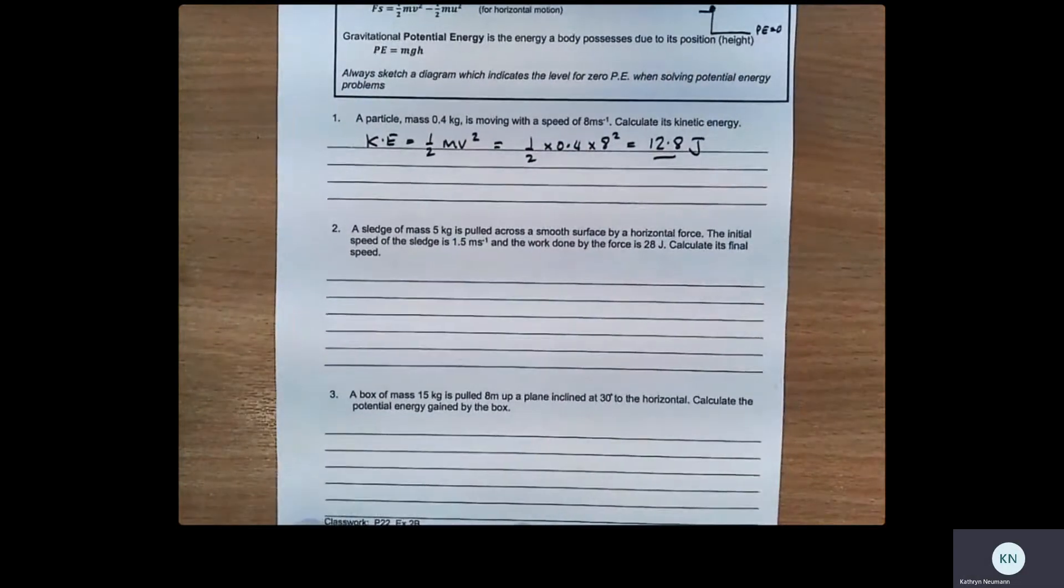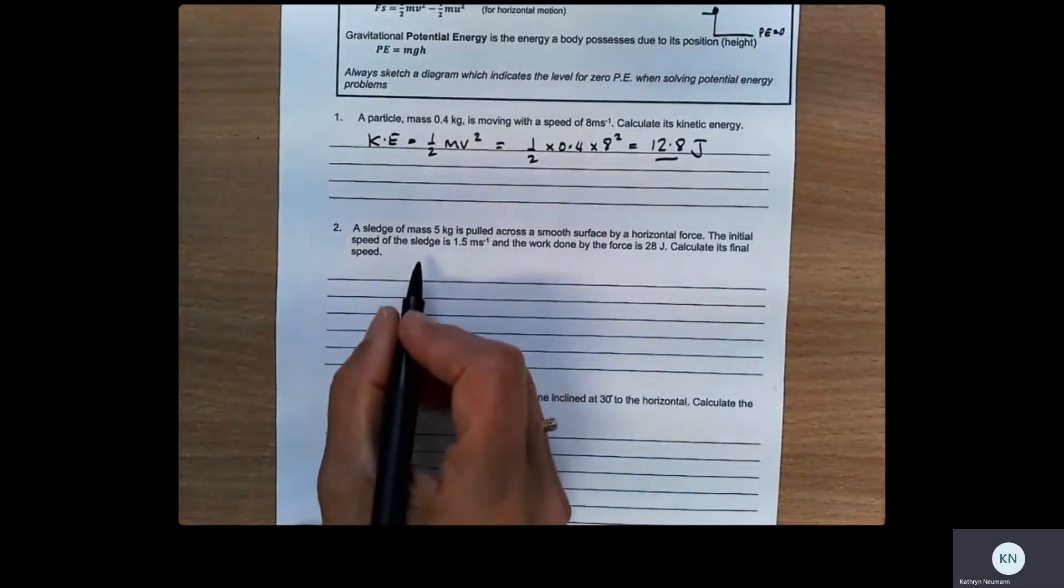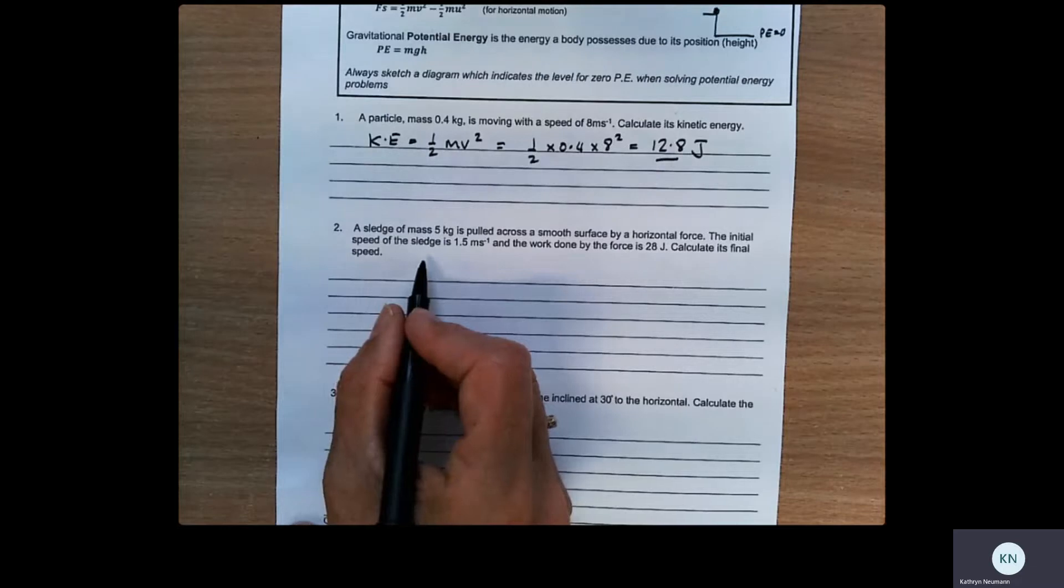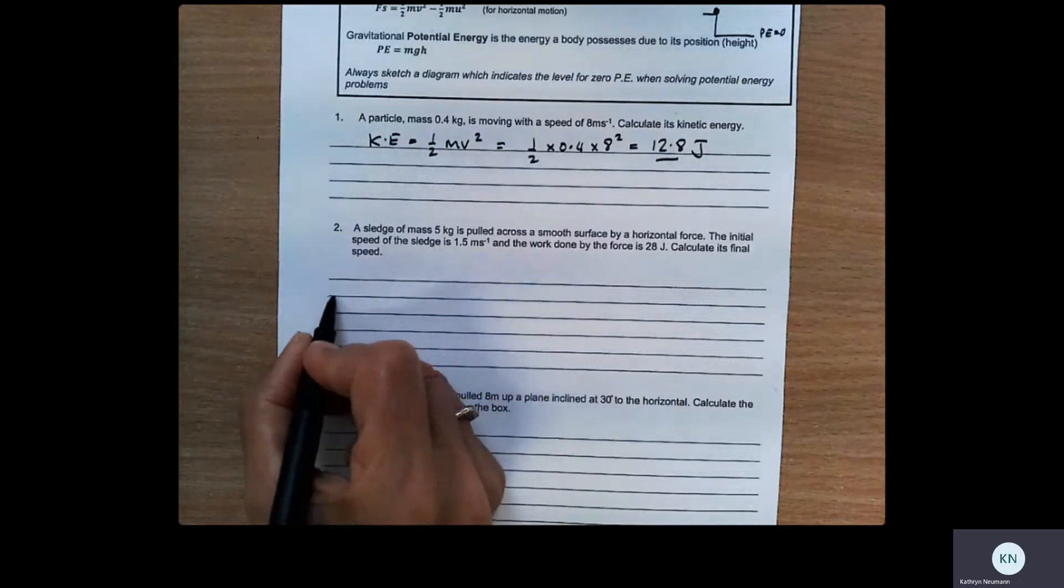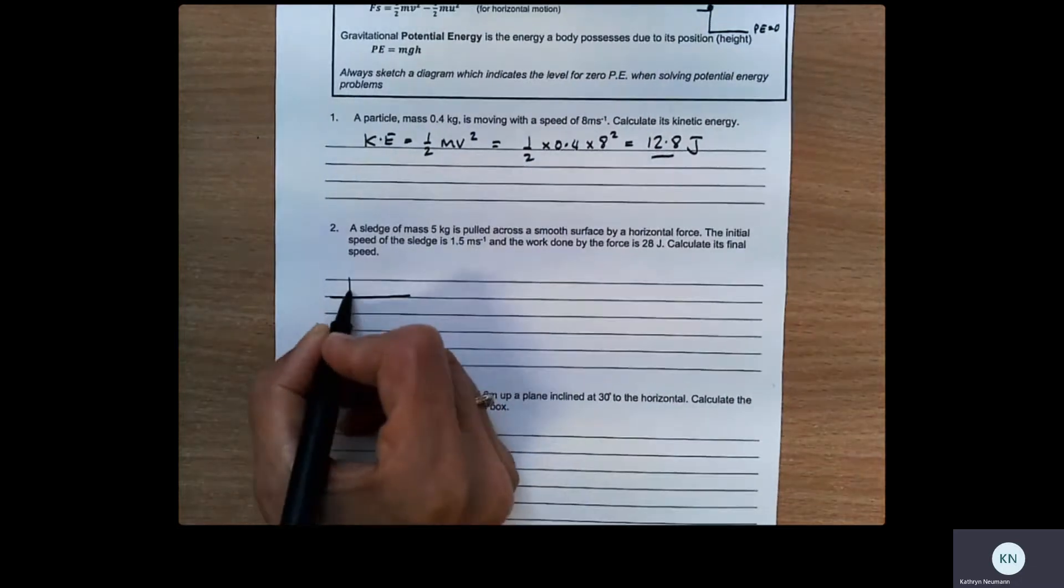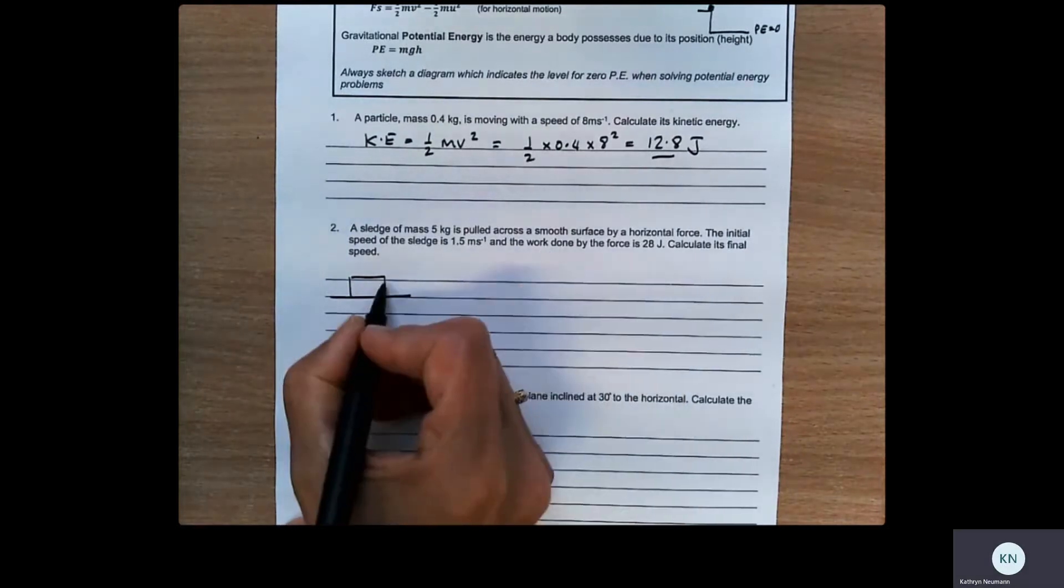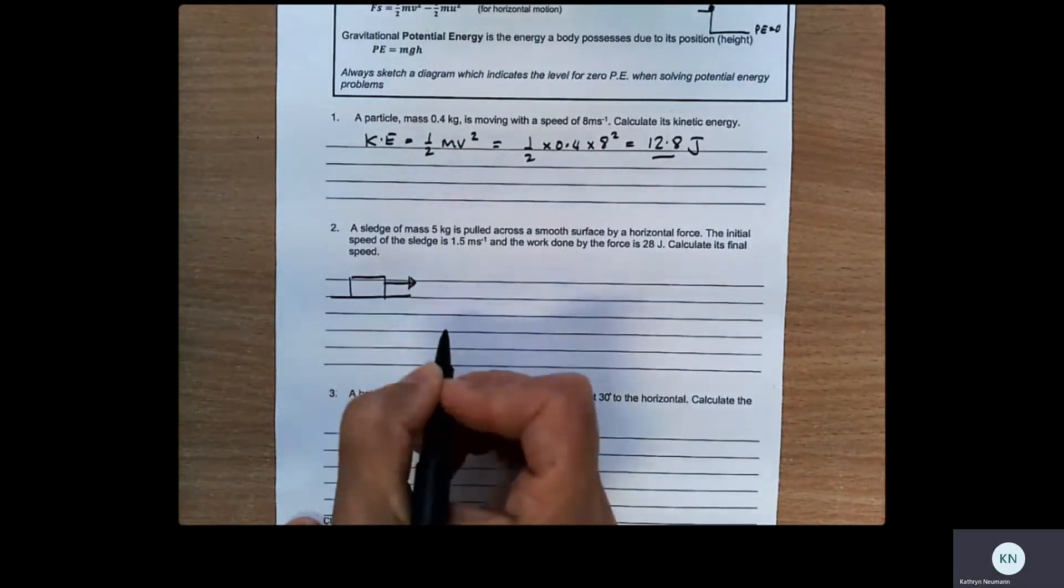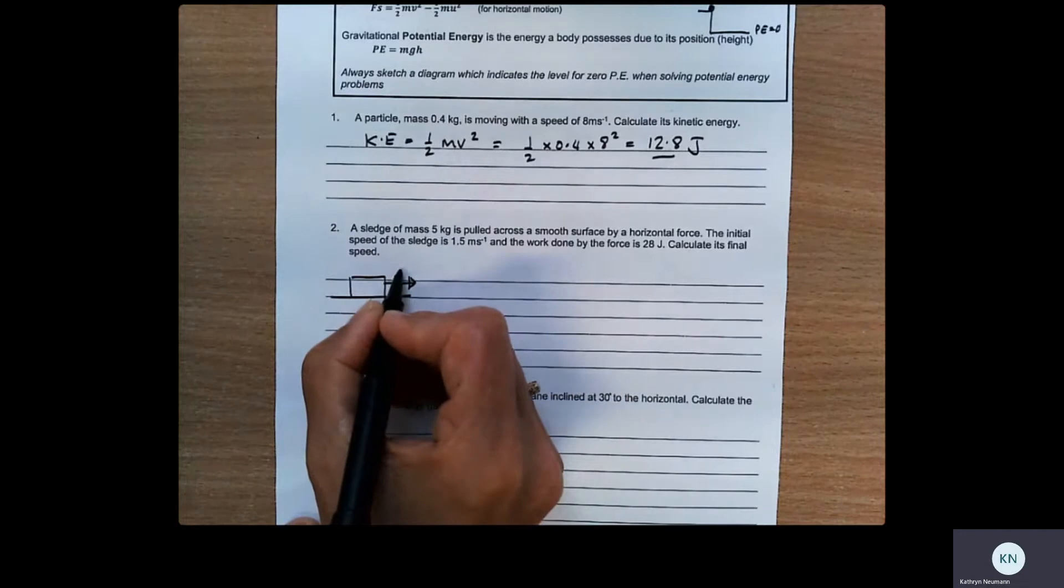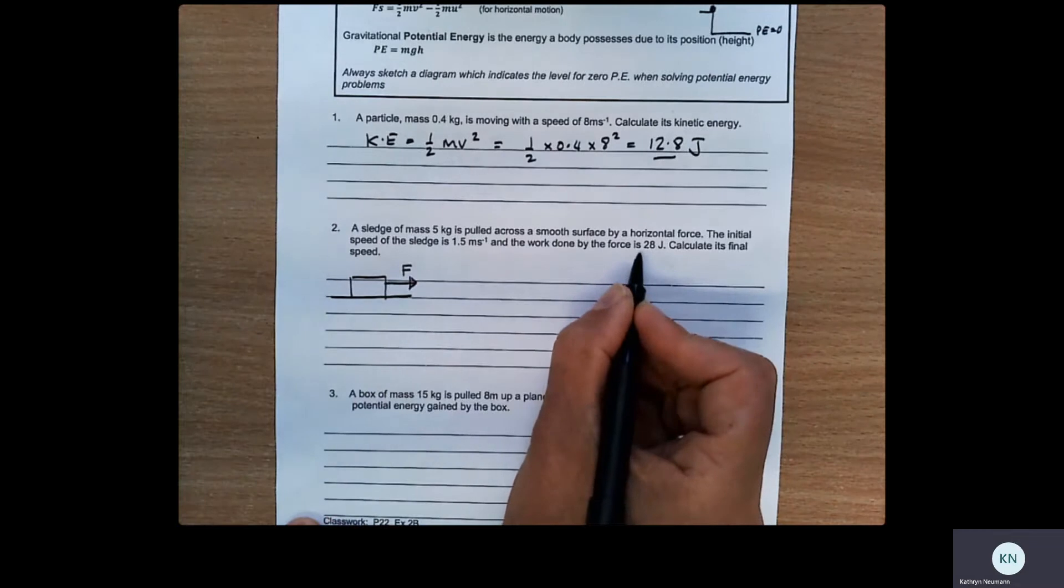Question two, we've got a sledge being pulled across a smooth horizontal surface. So again, just draw a quick diagram just to make sure there's nothing you're missing. By a horizontal force. So we've got a force acting here. And we know that the work done is equal to 28 joules. So the work done is change in energy.